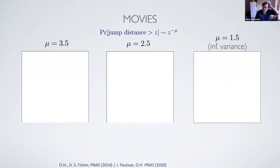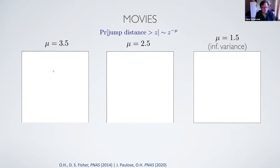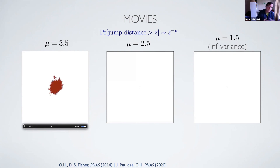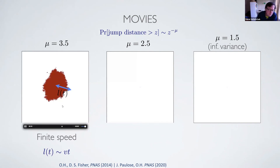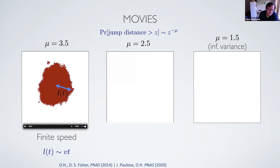Let me show you some simulations. Starting with mu equals 3.5 — already a power law — many people would say this has a broad tail. Before this work, people thought any power-law tail should generate exponential growth. But as you let this patch grow larger and larger, you find it just grows like a pancake whose diameter grows linearly in time. So you have a broad kernel, yet the growth of this epidemic is still finite speed.